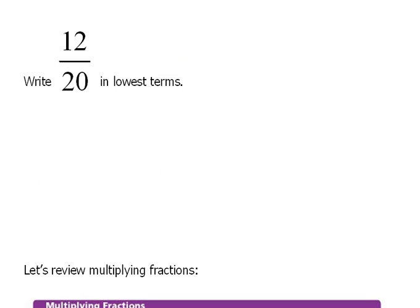Let's practice with that. Here we have a number that's 12 over 20, and we want to write this in lowest terms. So first things first, we need to go ahead and write out our prime factorizations.